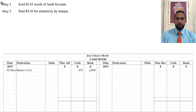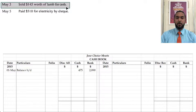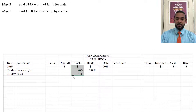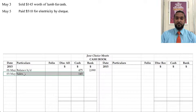On the 3rd, we sold $145 worth of lamb for cash — that's a cash sale. That means money is coming in, which is going to be recorded on the debit side. So on the debit side under cash, we're going to see $145, and it's going to say 'sales' in the details column, because we sold lamb for cash.